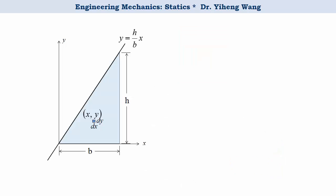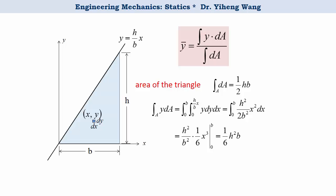And then we do the same thing for the y bar. The denominator is of course still the total area, one half h times b, but we need to integrate y dA, and eventually we get y bar equals one third h. This is the first approach.